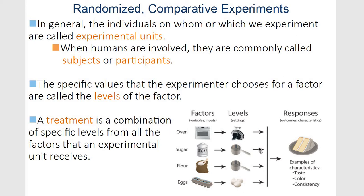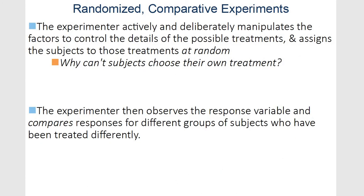Your treatment would be a combination. Say you had several factors going on with different levels — different amounts of sugar, flour, and eggs. One treatment would be the oven at 300, the sugar at half the recommended amount, flour the same, and one egg — then see what the outcome is. The experimenter controls those factors and wants to control every detail that might change the outcome.